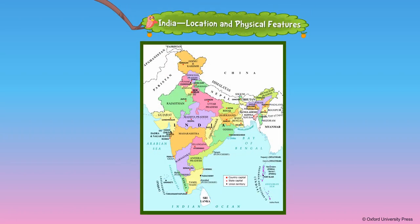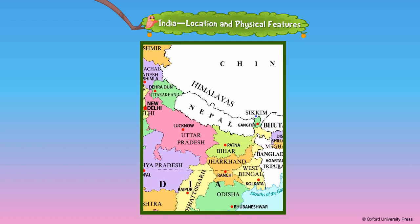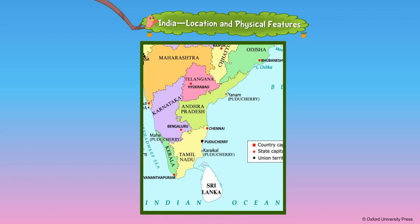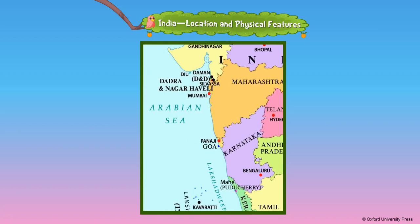Our country India is located in the continent of Asia. It is situated in the Northern Hemisphere. India has natural boundaries on all the sides — the Himalayas in the north, the Indian Ocean in the south, the Bay of Bengal in the east and the Arabian Sea in the west.